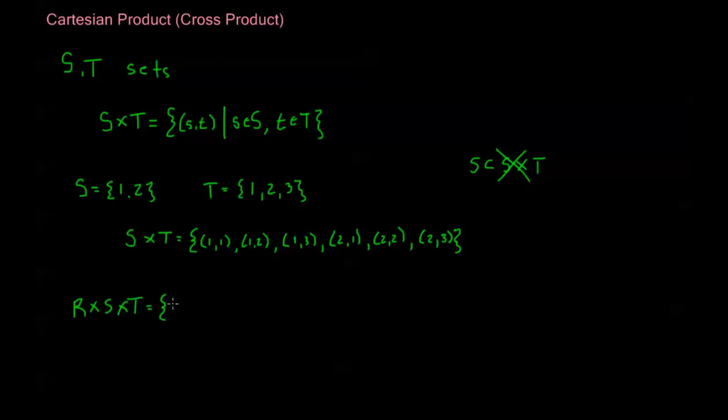is going to be the set of ordered triples, little r, little s, little t, where each little element is an element of the respective set.